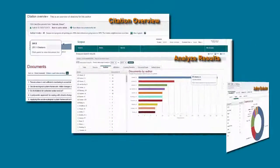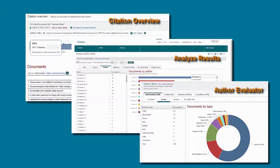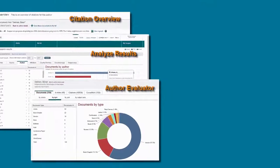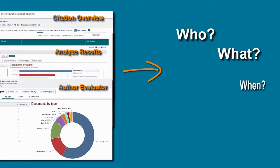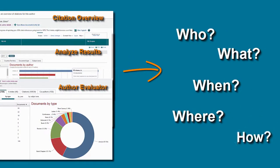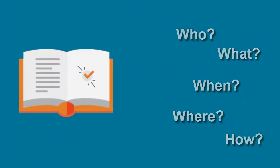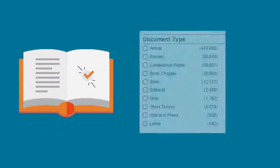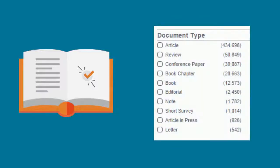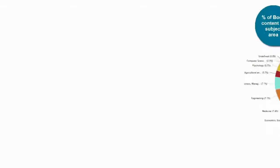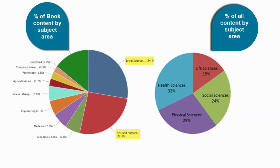Each of these tools can help you to better understand what is happening in a certain area and understand the who, what, when, where, and how of a particular field. We started from books, but the same steps can apply to any content type and any field, no matter how broad or specialized.